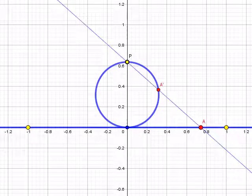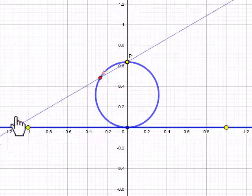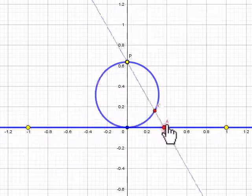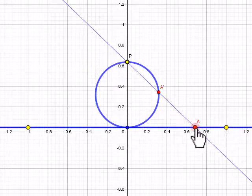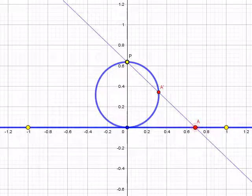A line from P to any point A on the number line intersects the circle at some point, which we can call A prime. Therefore, every point on the number line is matched to a corresponding point on the circle.